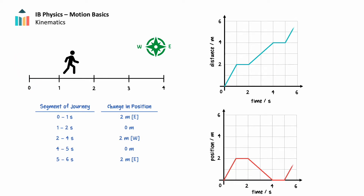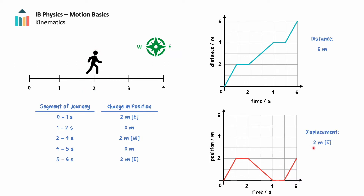The person once again turns around and walks two meters east in one second. During the six-second journey, the person has traveled a distance of six meters. Regardless of which direction they were walking, their distance continued to increase. During the same six-second journey, the person has moved two meters east of their initial position, so their displacement is two meters east. When they turned around and walked in the opposite direction, their displacement decreased.